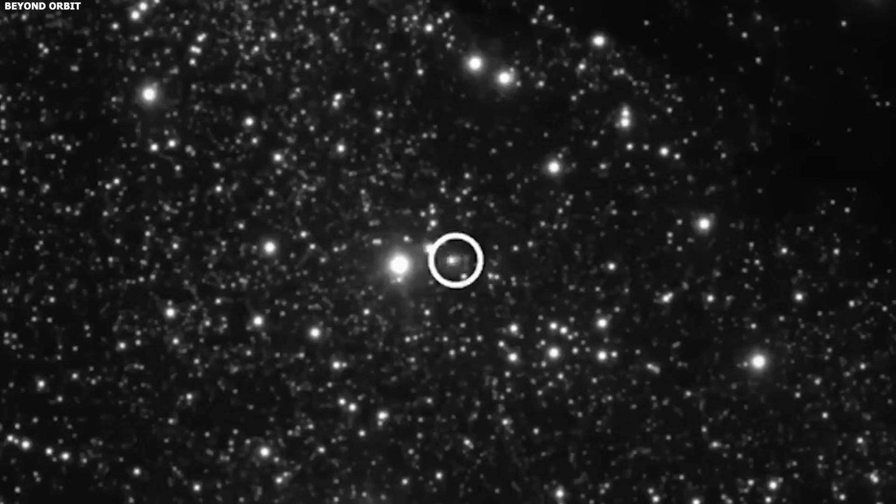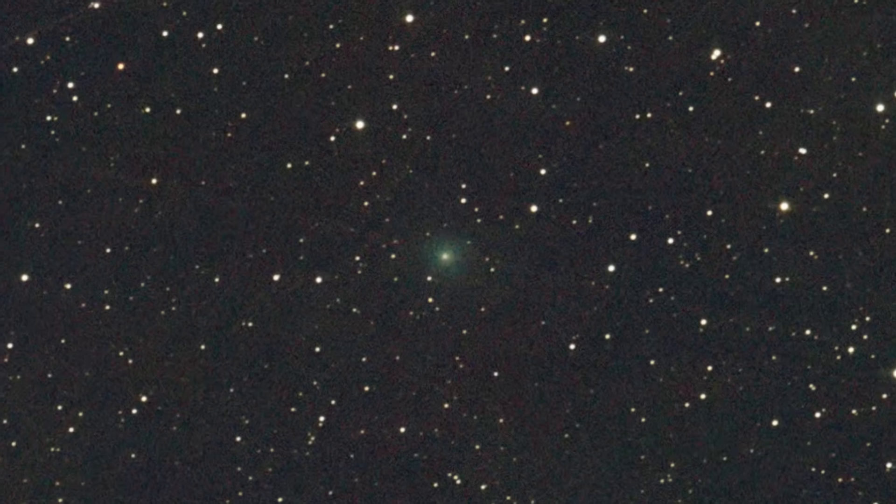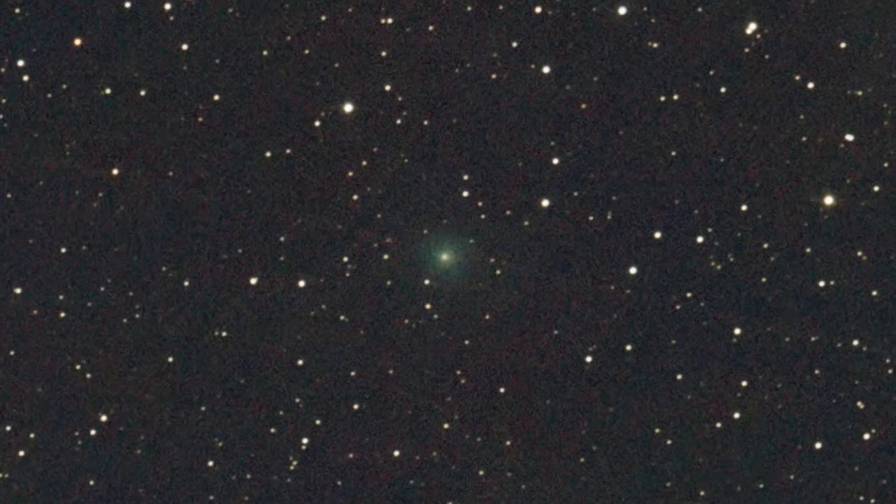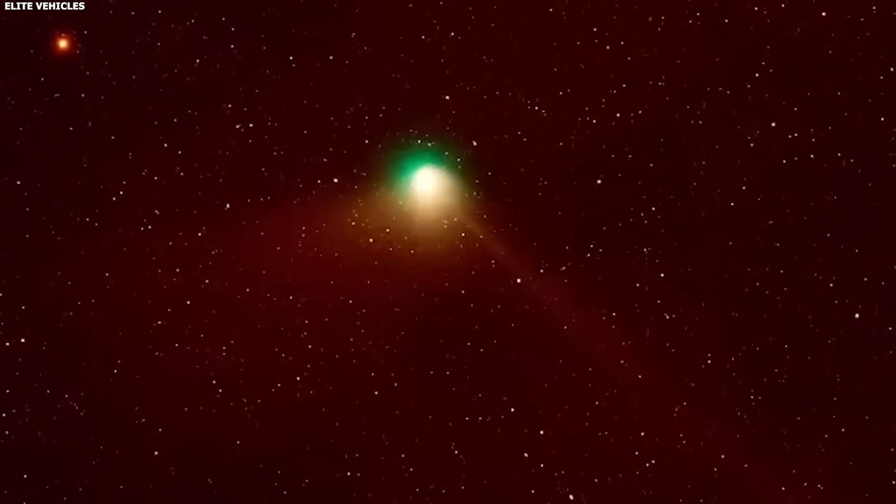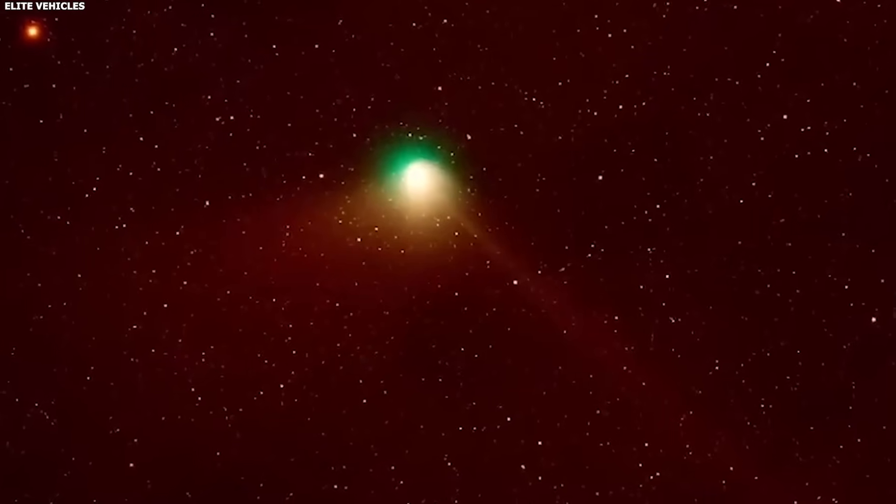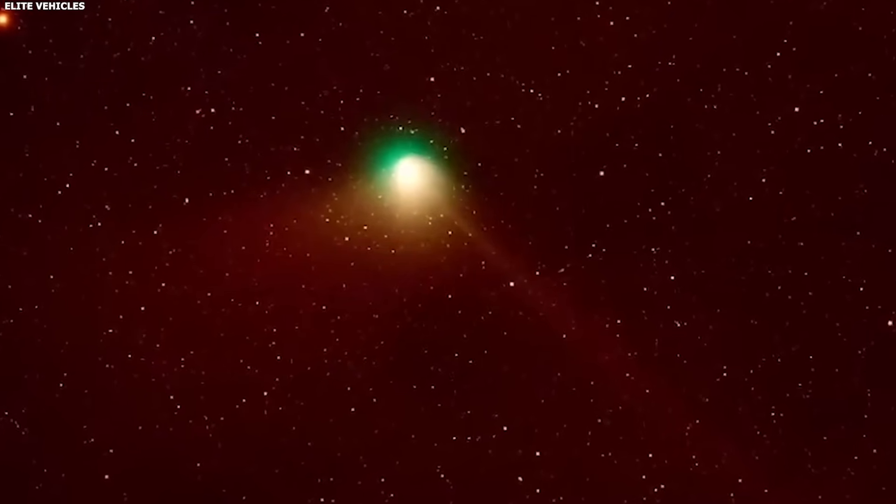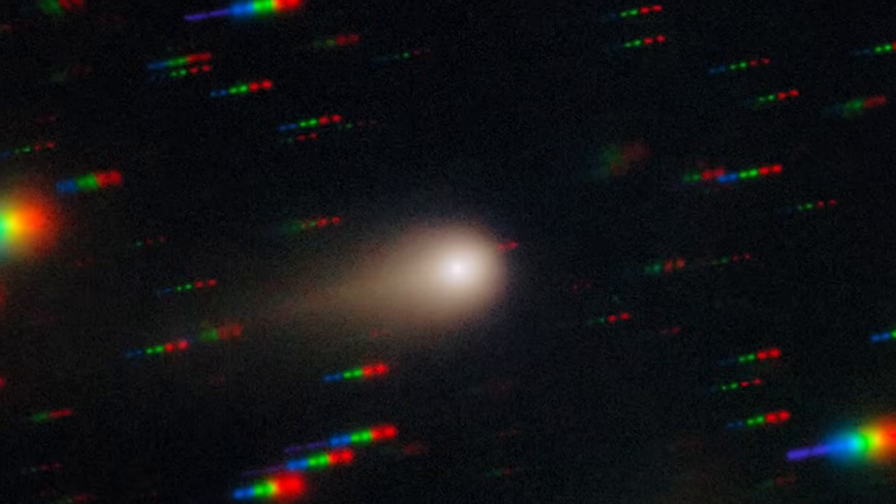One astronomer in Thailand, Tirasak Thaluang, captured an image on December the 13th, 2025. The anti-tail was clearly visible. Same orientation. Same structure. This is less than a week before closest approach to Earth. The feature is persistent. So if solar wind and radiation pressure push everything away from the sun, what's pushing this material toward the sun?